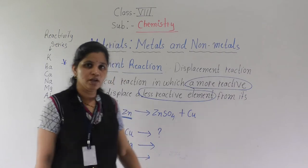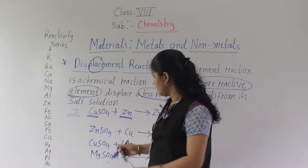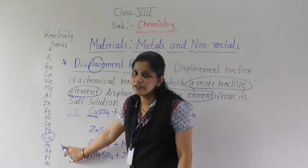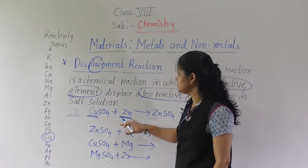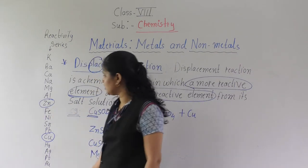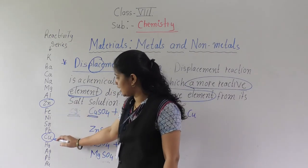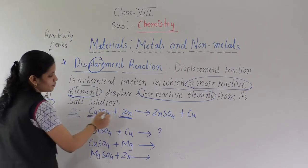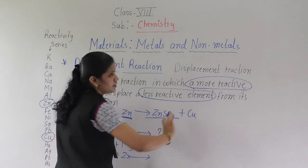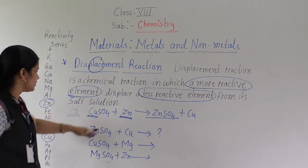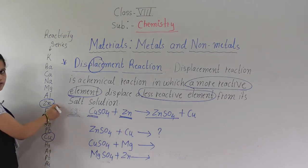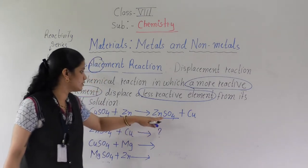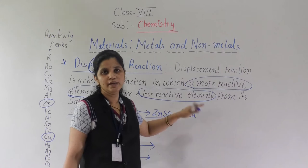Now we will see the positions. Where is copper (Cu) in the reactivity series? Cu is on the lower side, meaning it is less reactive. And zinc (Zn) is higher up, meaning Zn is more reactive than Cu. So zinc will take the place of copper. Therefore, Zn reacts with CuSO4 to form ZnSO4, and Cu is separated. Cu is less reactive than Zn, so Zn takes the place of Cu and forms zinc sulfate, while copper is released.